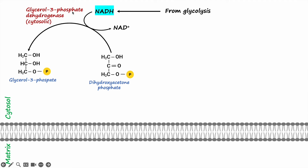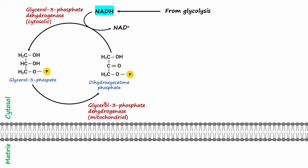This reaction is carried out by the cytosolic enzyme glycerol-3-phosphate dehydrogenase. Once glycerol-3-phosphate is synthesized, it is then oxidized back to dihydroxyacetone phosphate with the help of the mitochondrial enzyme glycerol-3-phosphate dehydrogenase, which is present on the outer surface of the inner mitochondrial membrane. This reaction also regenerates dihydroxyacetone phosphate. Most importantly, electrons from glycerol-3-phosphate are then passed on to FAD.